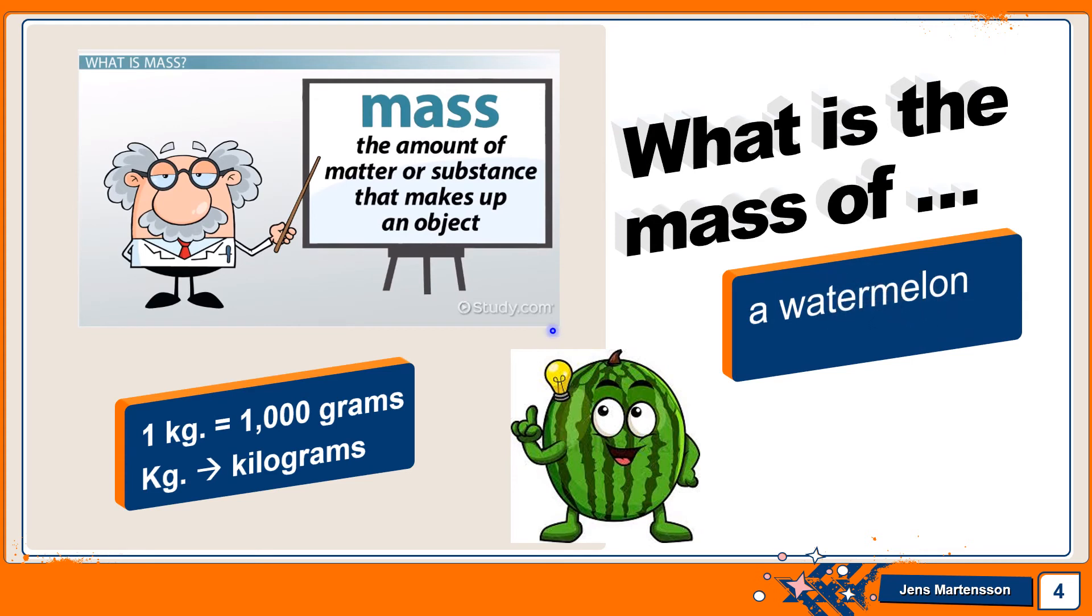So now let's look at the mass of a watermelon. So let's think. The amount of matter or substance that makes up an object is the mass. And let's think back to our understanding of one kilogram equals 1000 grams, or we also know that two pounds is one kilogram. So if we think about a watermelon being either 125 grams or five kilograms, what would you say is the best or approximate estimate?